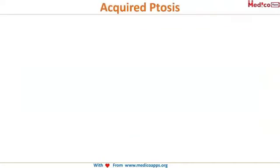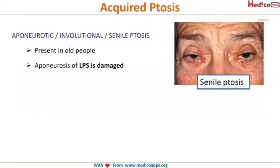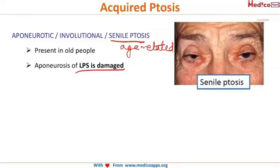The first acquired type is aponeurotic or involutional, also known as senile ptosis — it is an age-related ptosis. It occurs due to damage to the aponeurosis of the levator palpebrae superioris muscle, which is no longer able to pull up the eyelid, resulting in ptosis.